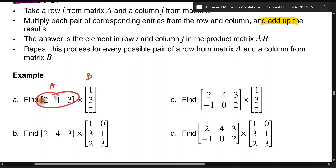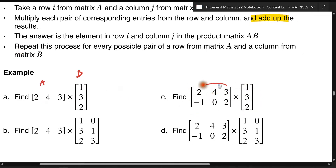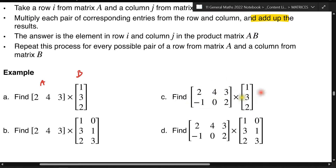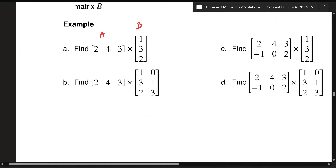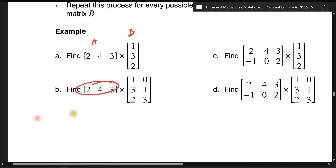Even if you've got one row and one column, or two rows and one column, all you're doing is multiplying that row with that column. Once you finish that, you do the bottom row with that column. Or for example, if you've got one row, you multiply it with the first column, and then you use the same row to multiply with the next column. So let's do some examples here.